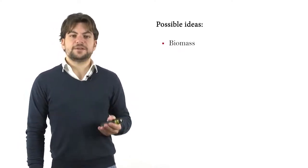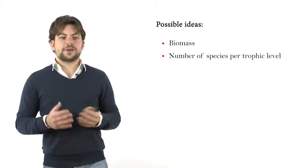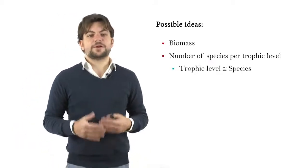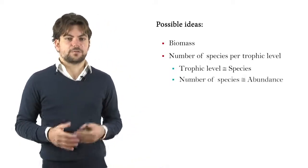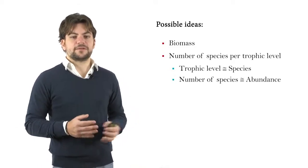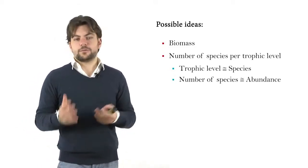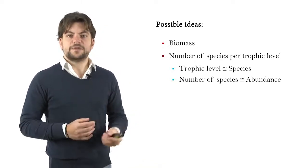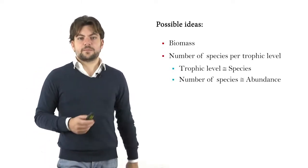An important question is how else could this graph be constructed? How would the data be interpreted? There are possible ideas. For instance, we can build this data on biomass, or we can build this graph on the number of species per trophic levels, where the trophic levels are almost equal to the number of species, and the number of species is almost equal to the abundance.